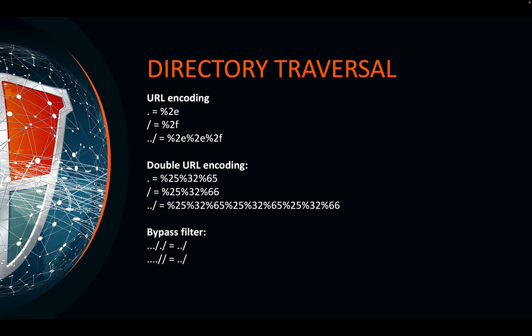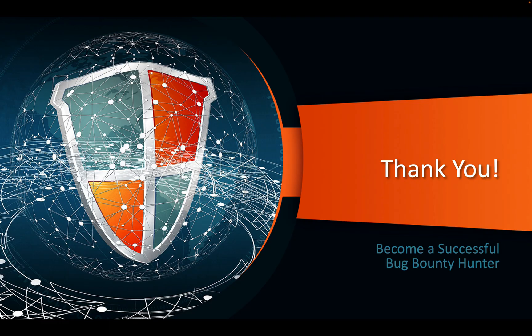URL encoding the most important characters — the dot and the slash — and some other filter bypasses are shown here. I highly recommend heading over to Payload All The Things, which is a fantastic GitHub repo where you'll find many more filter bypasses in the directory traversal section. In the next videos I'll show practical demos based on PortSwigger, going through all apprentice and practitioner labs on directory traversal so you can follow along and see how these vulnerabilities are exploited in practice.